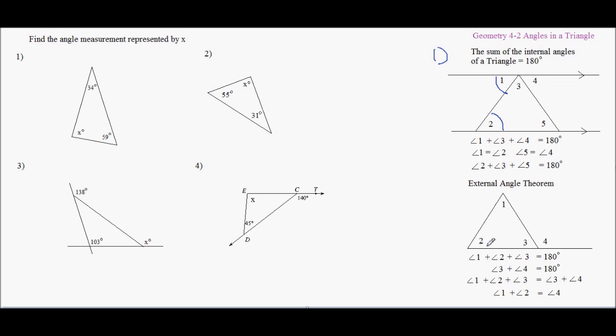And then, the external angle theorem. Now that we know that 1, 2, and 3 has to be 180, and we know that 3 plus 4 is 180—this is a line, so a line is 180—angles 3 plus 4 has to be 180.